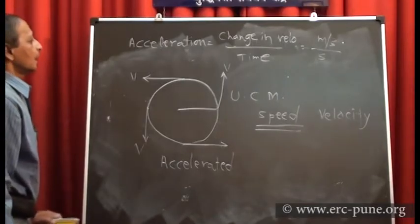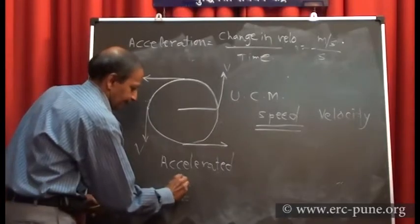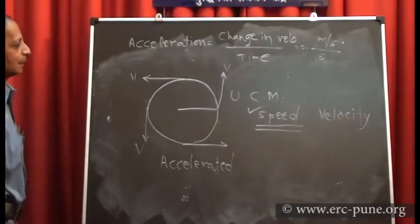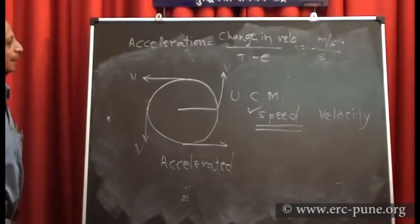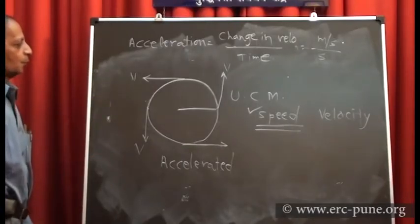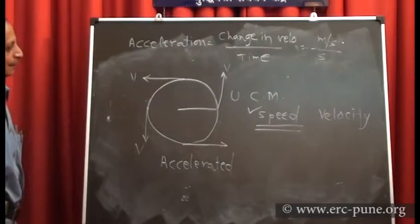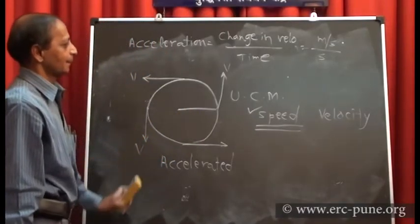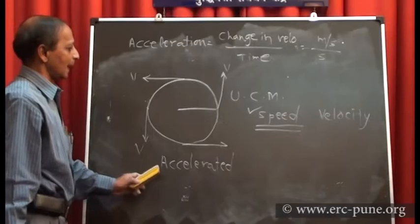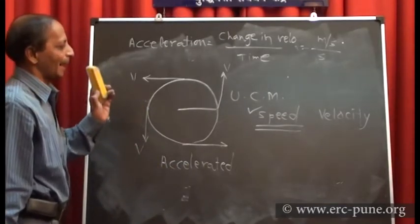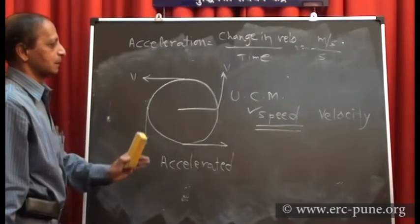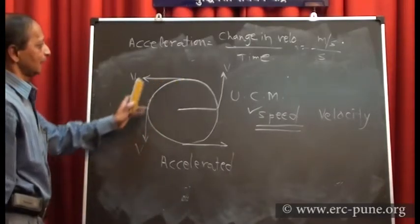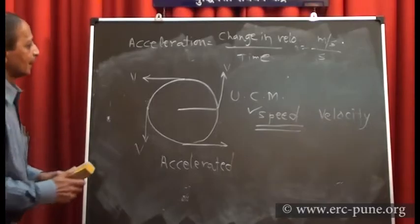The magnitude of the velocity can remain the same, so we say speed remains constant — not velocity. For example, a ceiling fan moves with constant speed, not constant velocity. Uniform circular motion is an accelerated motion because although the magnitude of velocity remains constant, the direction is continuously changing.